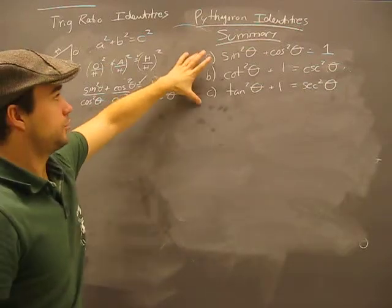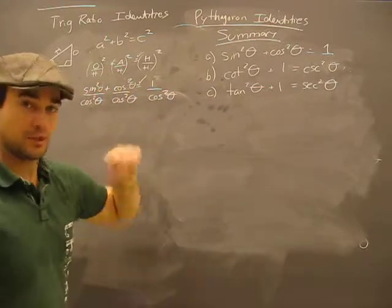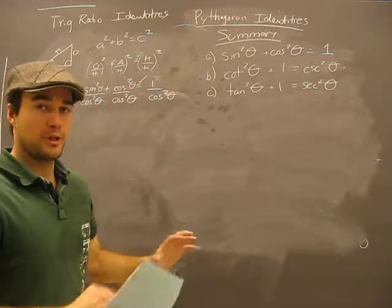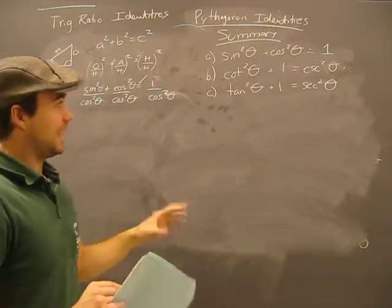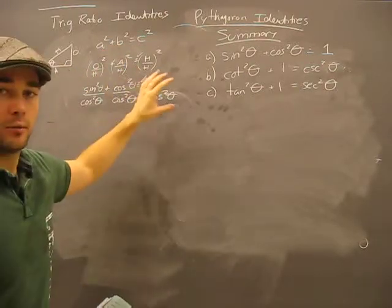So here's your three Pythagorean trig identities summary. How we got them, the previous videos will explain in more depth. What you need to remember is that no principle was used greater than a grade 9 principle, and that was the actual Pythagorean theorem. The rest of this was all...